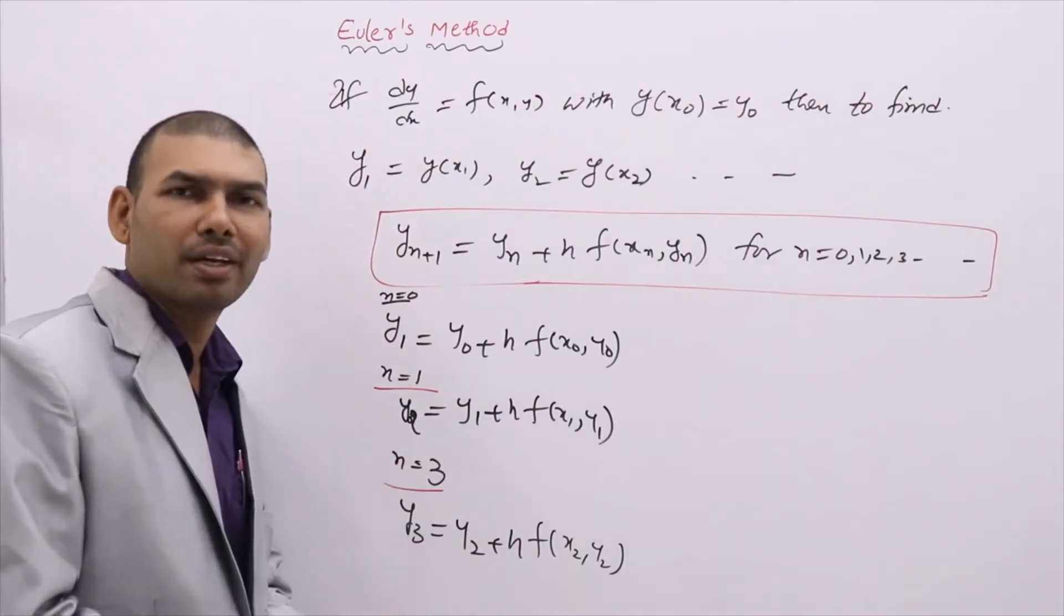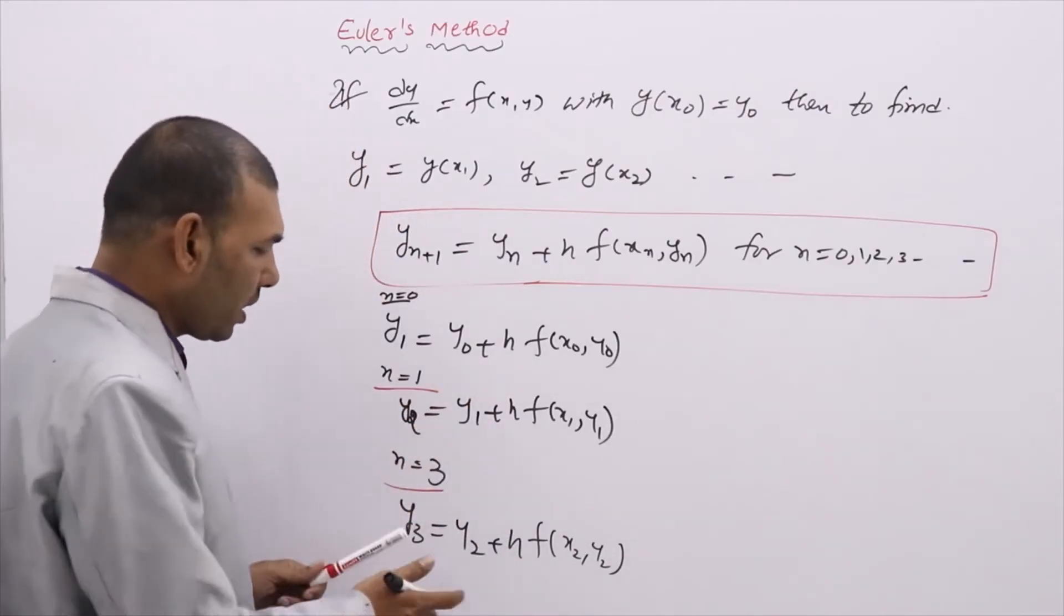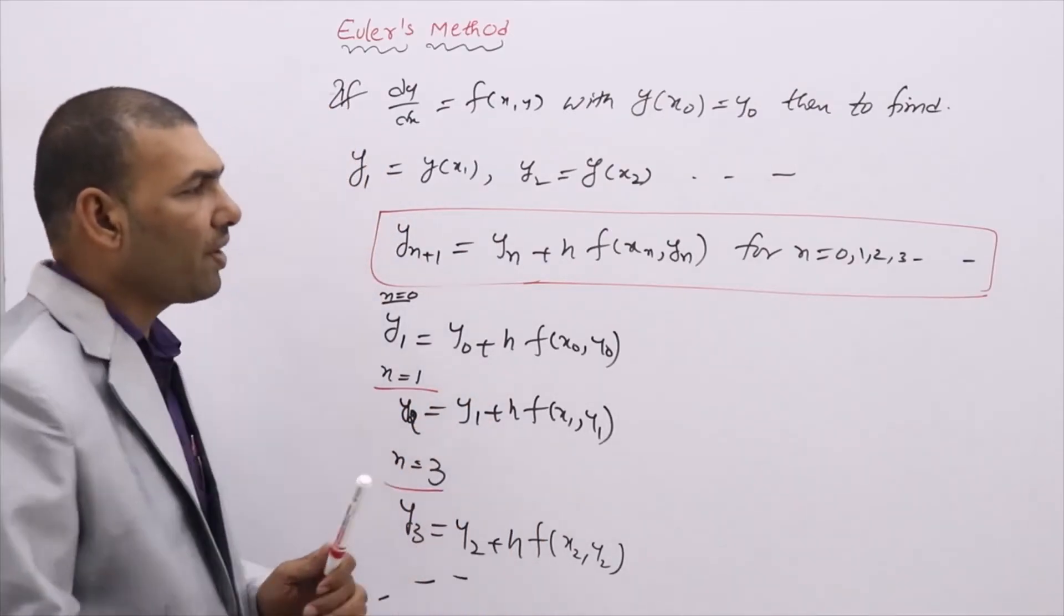These are the formulas to evaluate y₁, y₂, y₃ in Euler's. Like so on. In n approximations, we can evaluate.